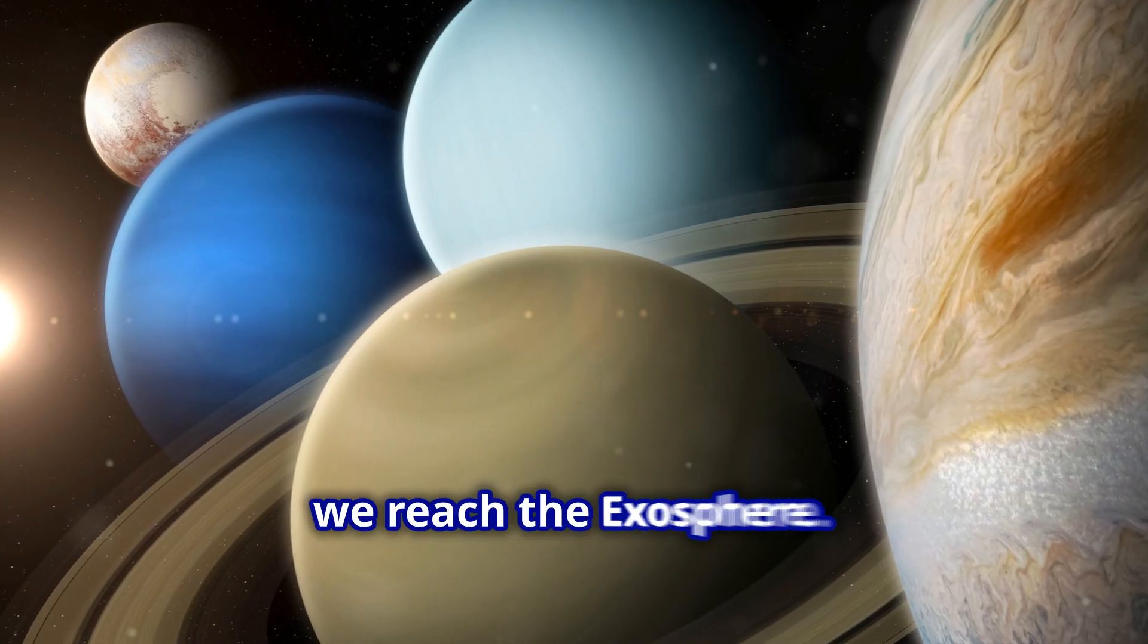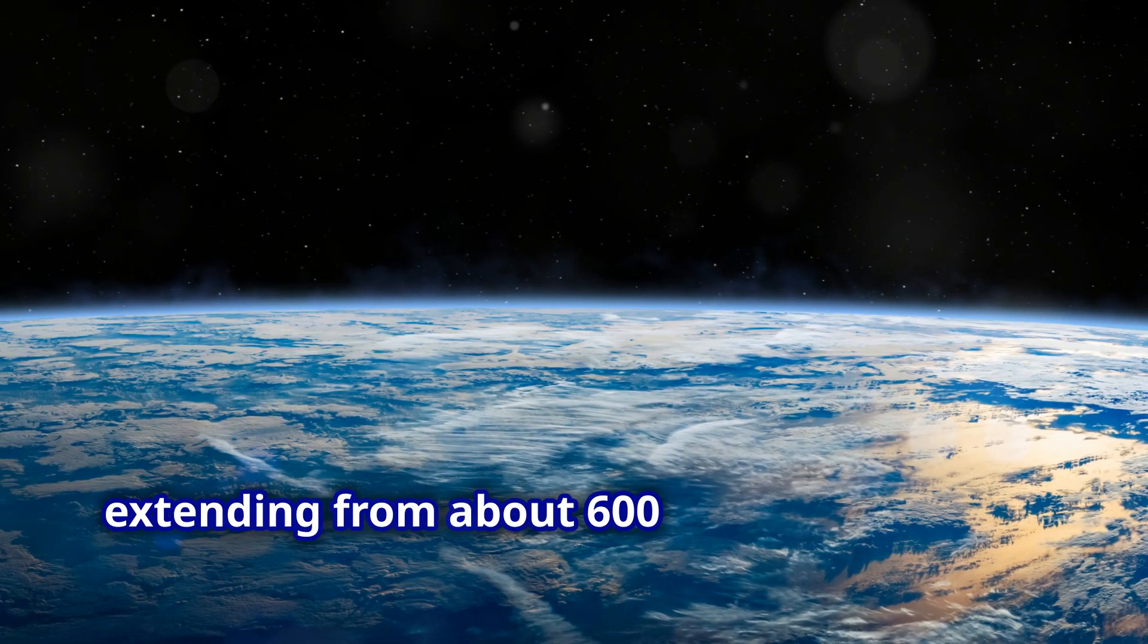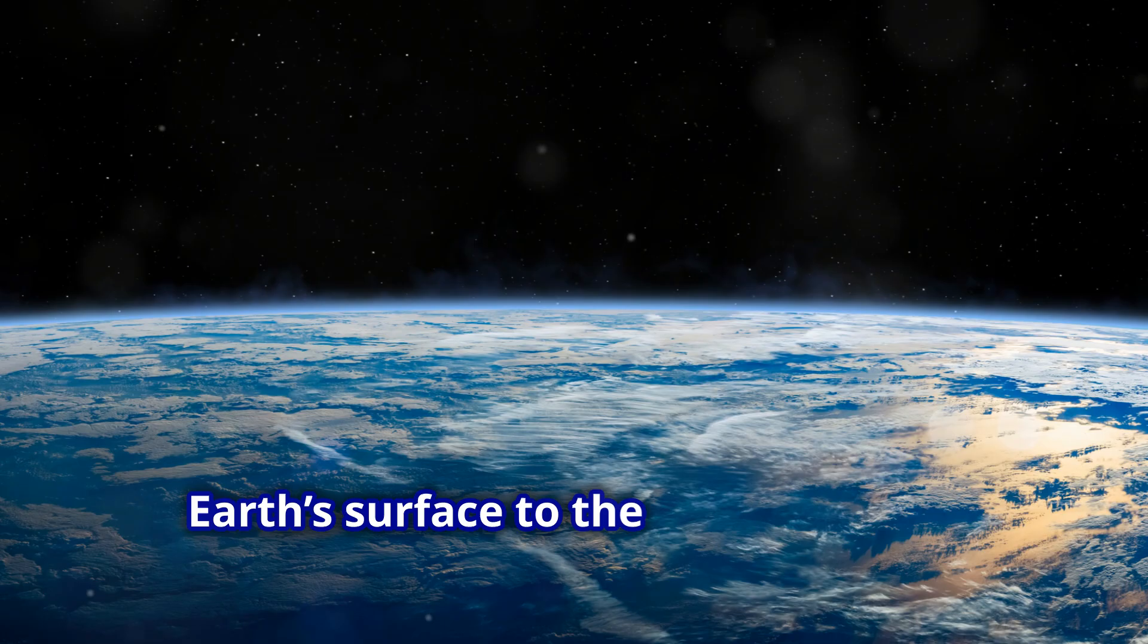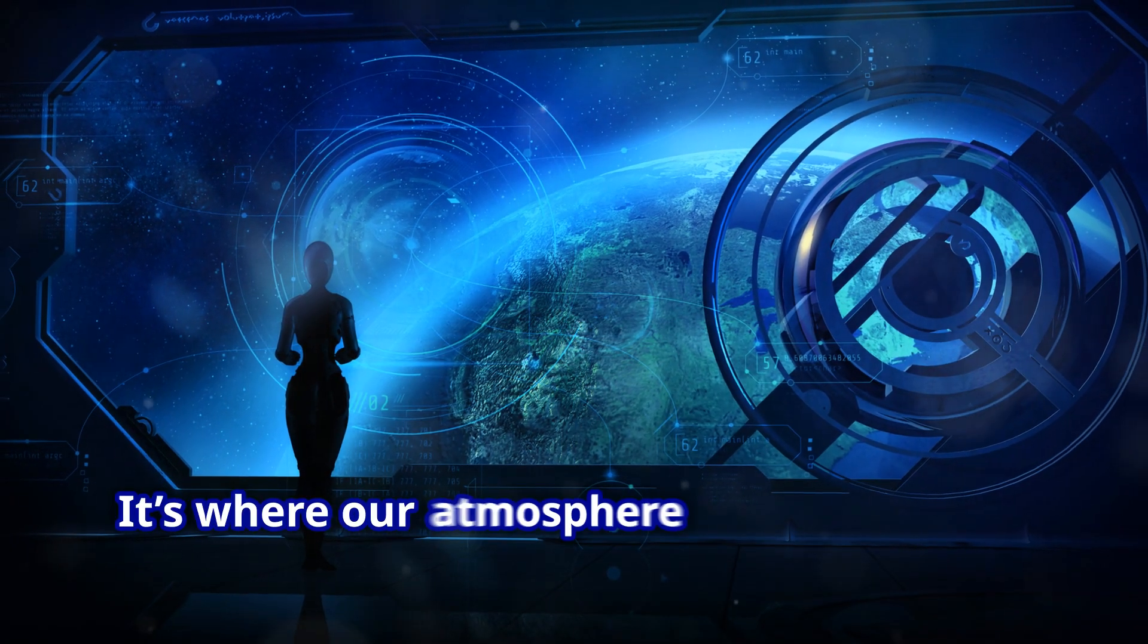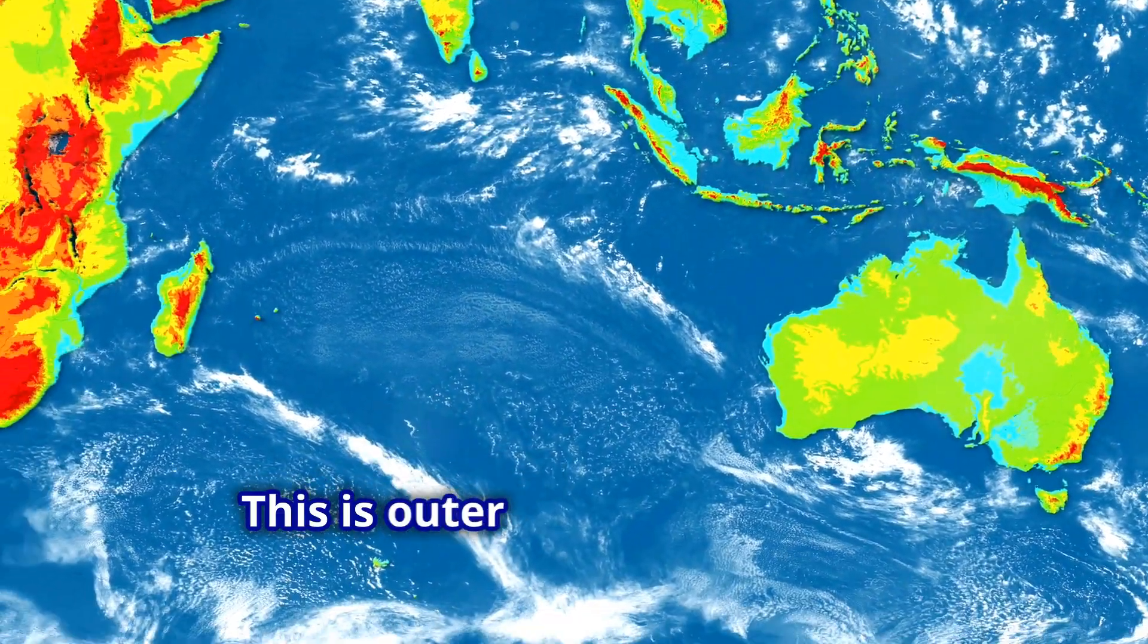Finally, we reach the exosphere. This is the outermost layer of our atmosphere, extending from about 600 kilometers above Earth's surface to the edge of space. It's where our atmosphere gradually fades into the vacuum of space. This is outer space's front yard.